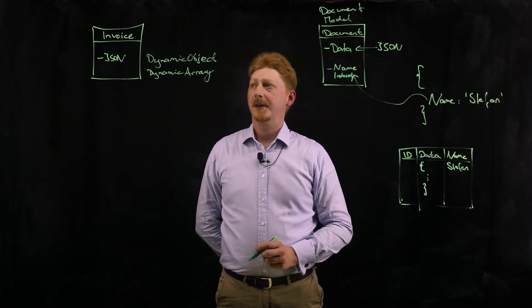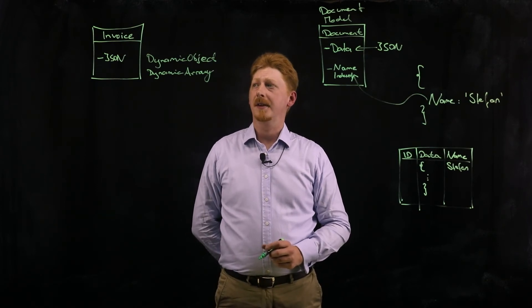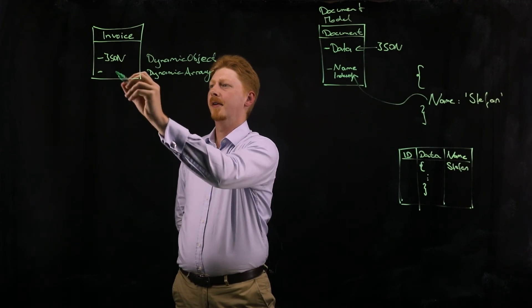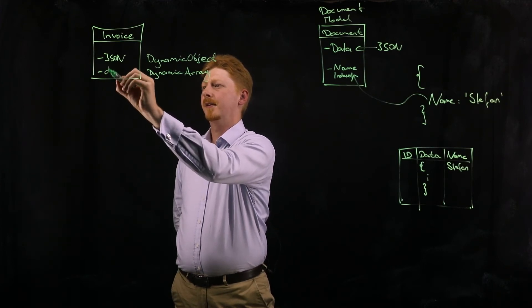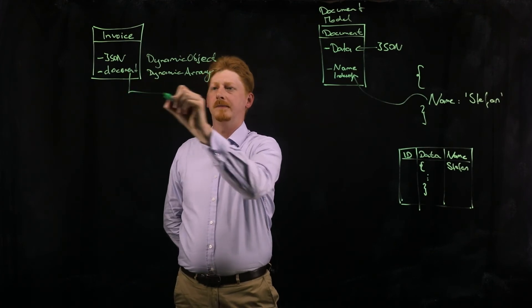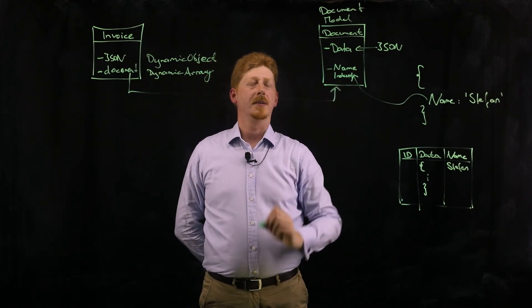One nice intersection with a regular object model is that I can add properties in a regular persistent class and link this to a document. Like this one.